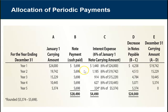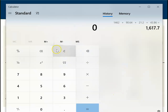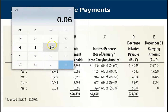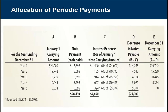Over the course of the year, we paid $5,698 in payments. How do we figure out how much of that $5,698 is interest and how much goes to principal? We take the interest rate, stated as 6%, and for the first year multiply it by the principal amount of $24,000. 0.06 times $24,000 gives us $1,440 in interest. So of the $5,698 payment, $1,440 is interest expense and $4,258 is the decrease in principal.